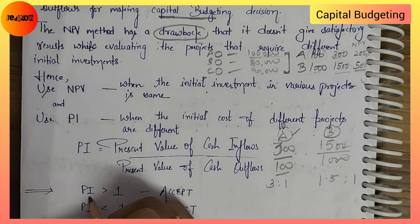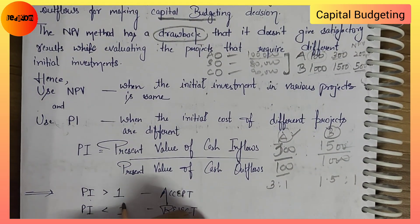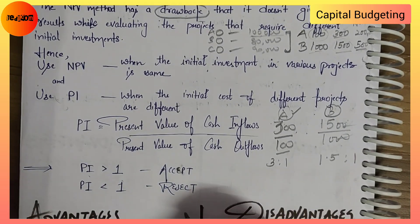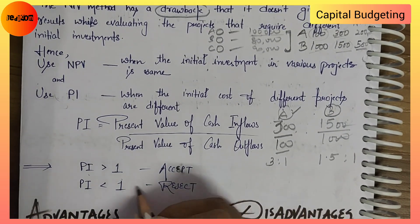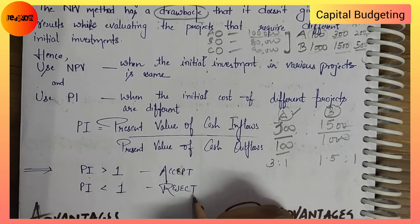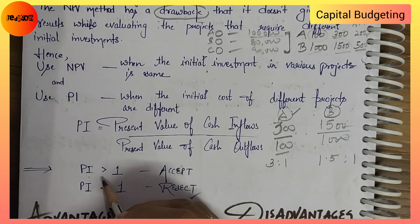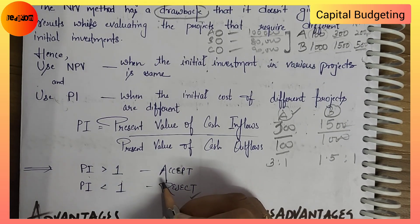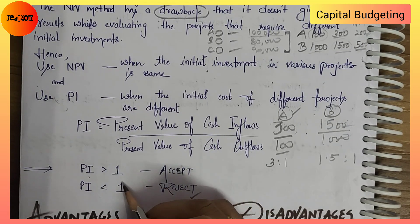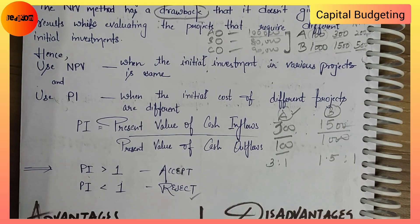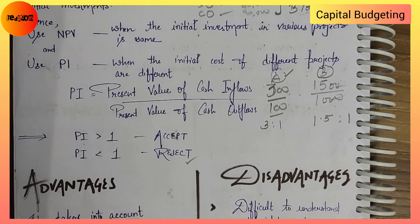When our PI is greater than 1, we need to accept the project. If the PI is less than 1, we need to reject the project. And if multiple projects have a PI greater than 1, we should go with the project that has the highest PI ratio.